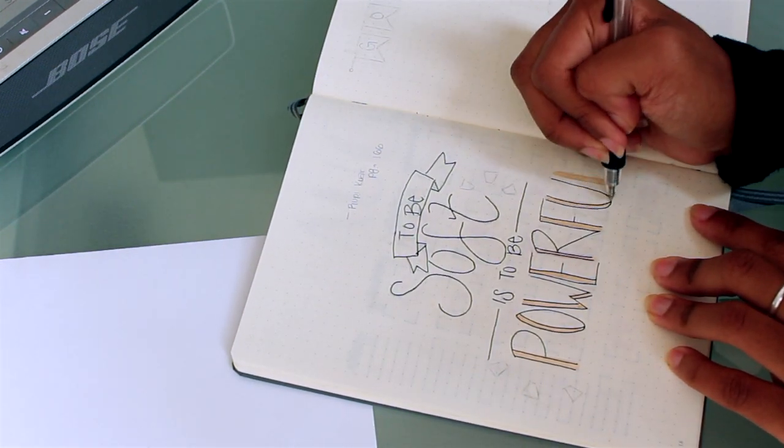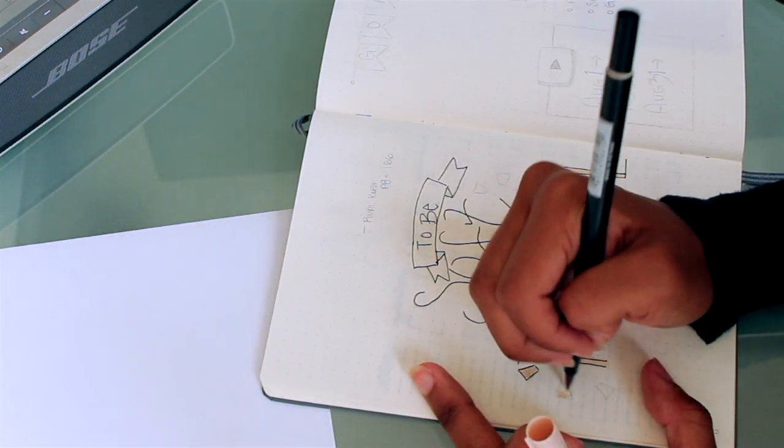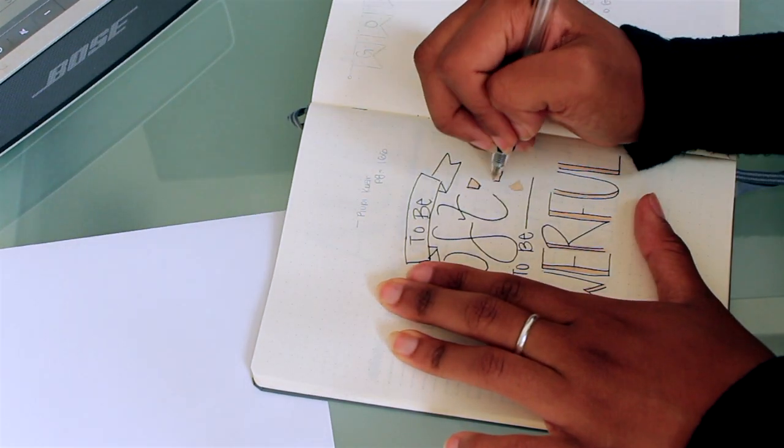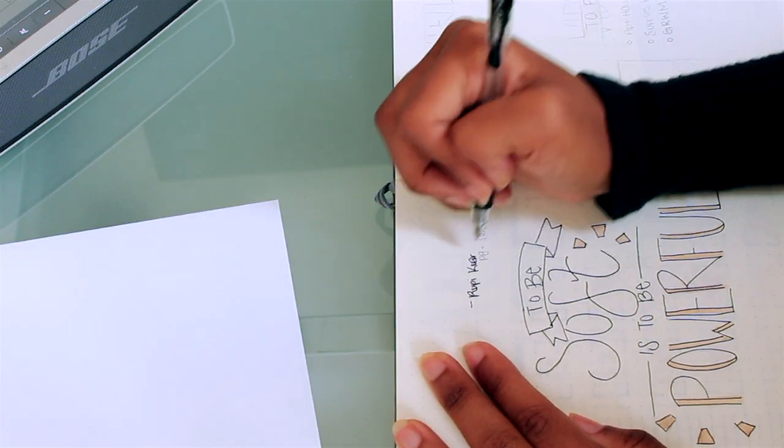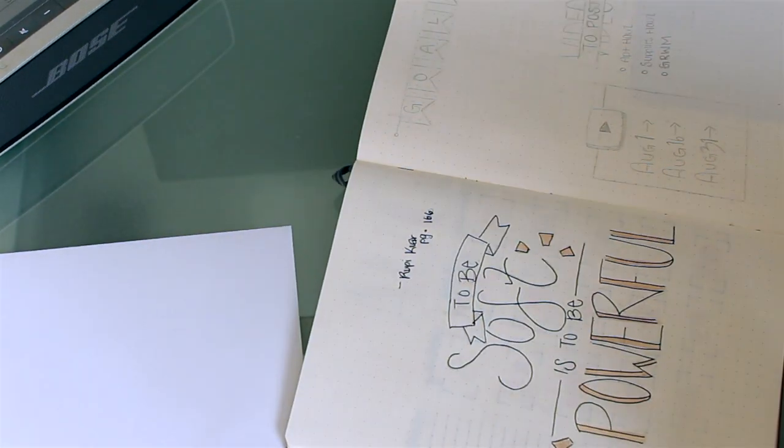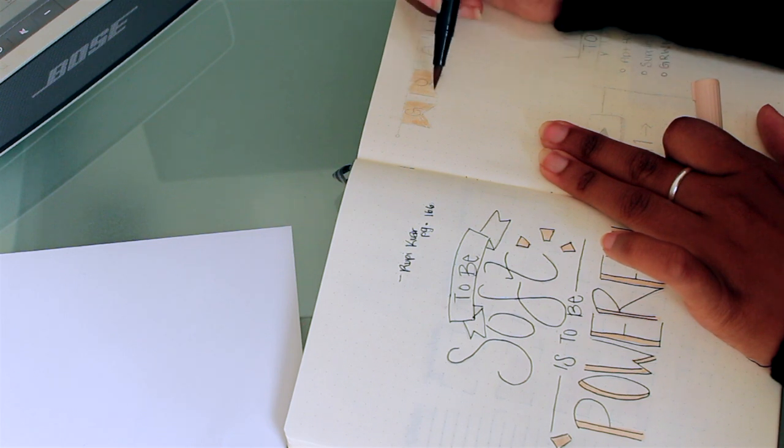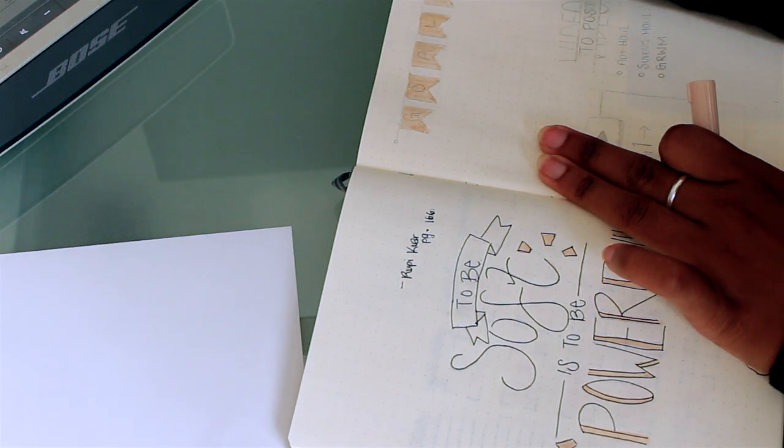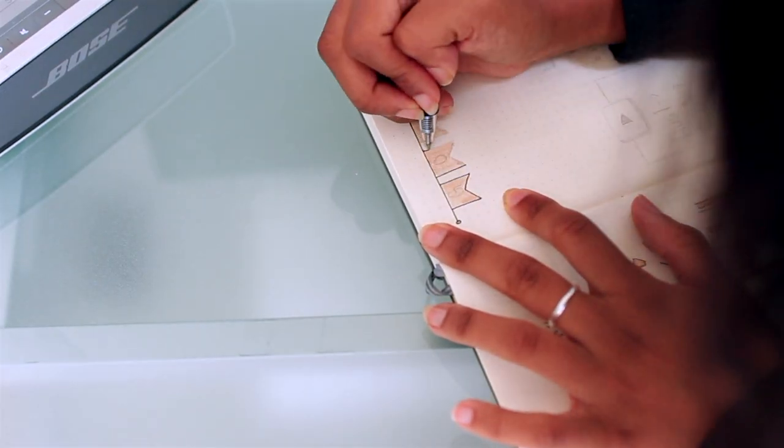It says to be soft is to be powerful and this is from the book Milk and Honey by Rupi Kaur. I love this book, it's just full of little poems that she made and this is probably like my favorite quote that I ever read from her book. So I just wanted to make a little page just that I created to that quote alone.